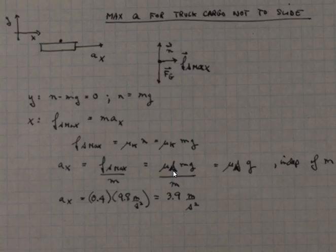So here I put the proper subscript in. The m's cancel. This is independent of the mass of the cargo. The mass of the truck is not in here, incidentally. Which is the mu sub s coefficient of static friction times g, independent of m.